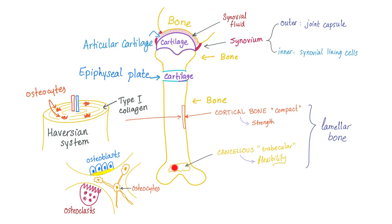If you take a section from the trabecular bone, you will find osteoclasts eating your bone, osteoblasts building your bone, and osteocytes in between. The way to remember it: osteoblasts build bone, and osteoclasts cut down bone.